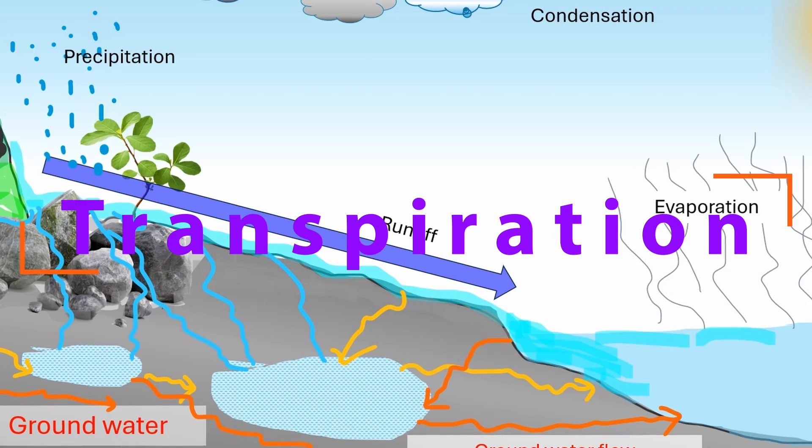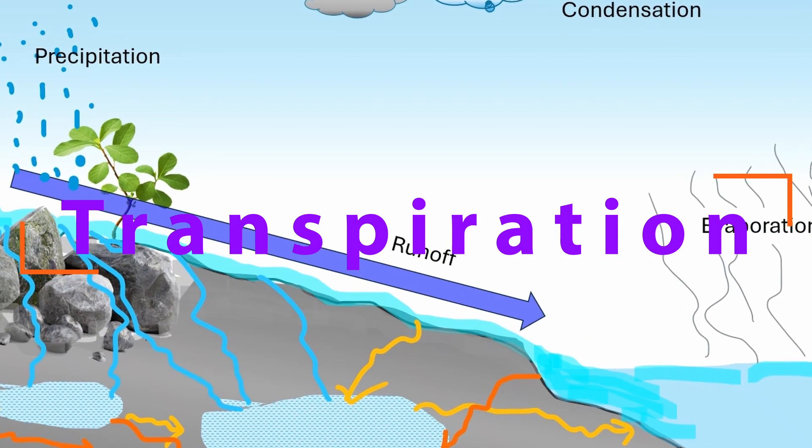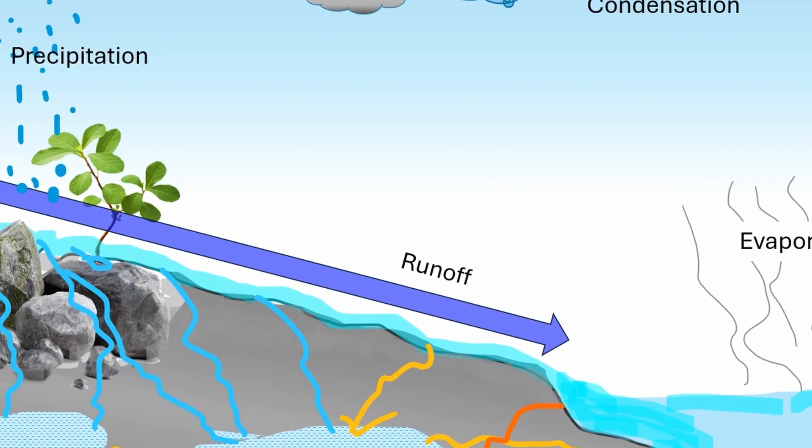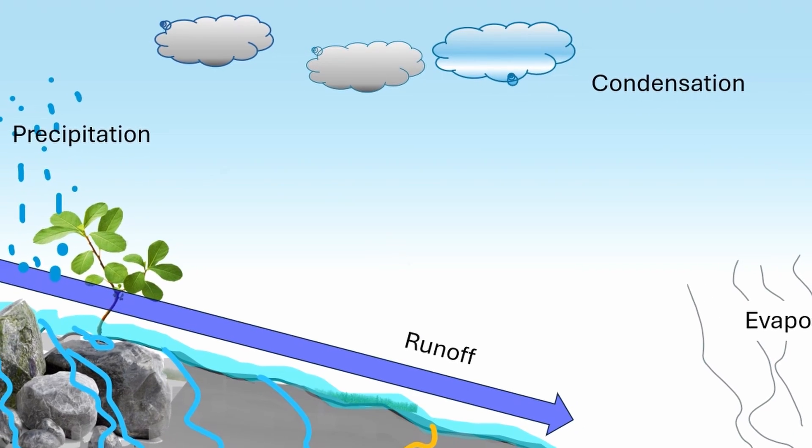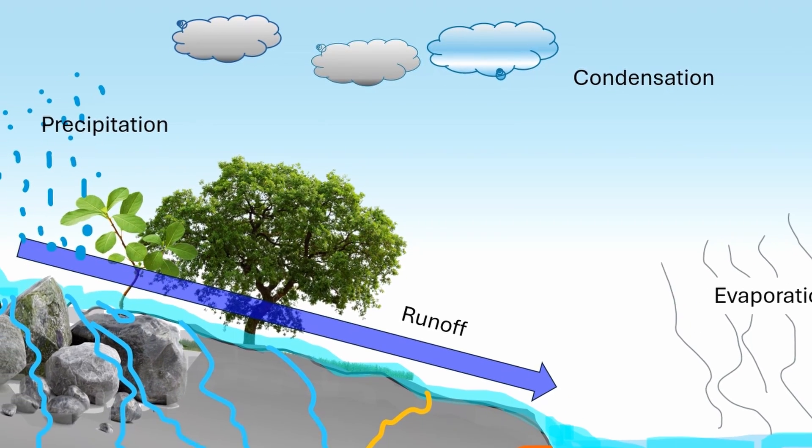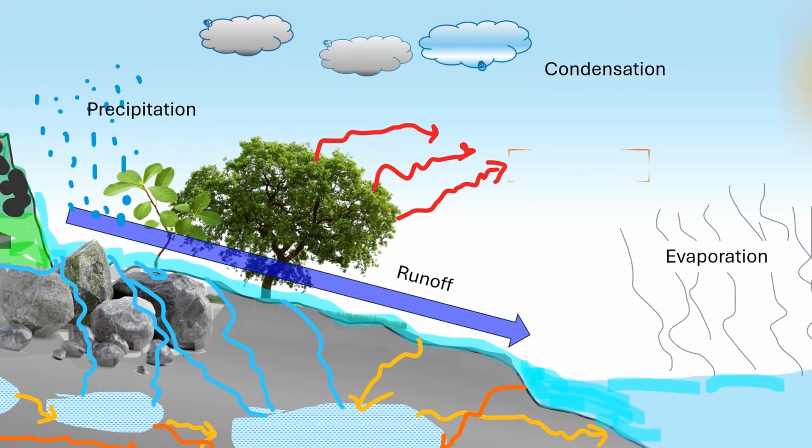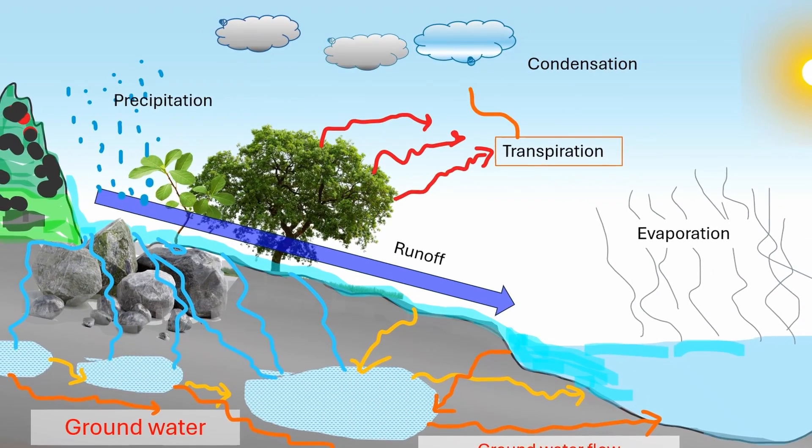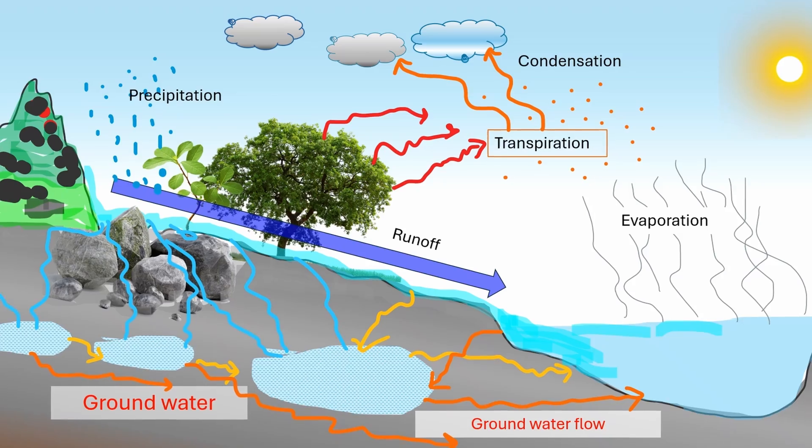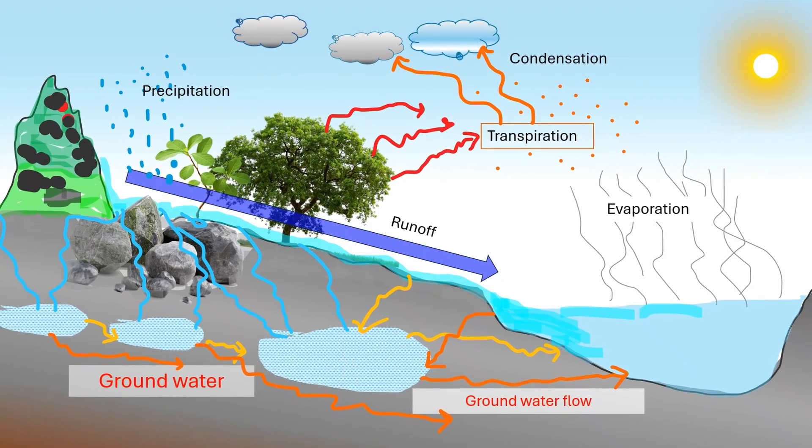Transpiration: Transpiration is the process through which water moves from plants into the atmosphere. Plants absorb water through their roots and release water vapor through small pores called stomata in their leaves. This water vapor then becomes part of the atmosphere and can later condense to form clouds.